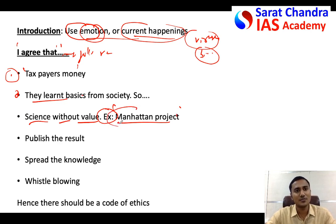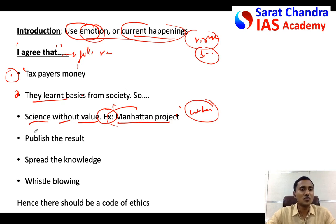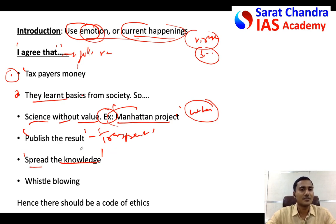You can also give the example of Wuhan, where scientists were working on certain viruses and faced ethical dilemmas and moral questions. Additionally, it is a responsibility of scientists to publish their results - any scientific innovation's results must be published and be transparent, so we can trust the research. It is also a responsibility to spread knowledge gained through research via seminars, newspapers, or textbooks.